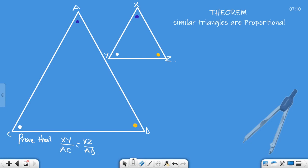In this video, we want to prove that similar triangles are proportional. This is a theorem. We know they are similar because this angle equals that—we're given that this is that and that is that. What are we required to prove? Prove that XY over AC equals XZ over AD.